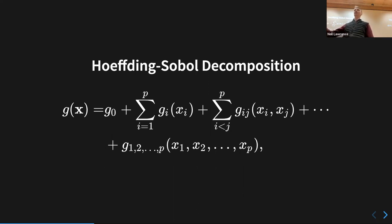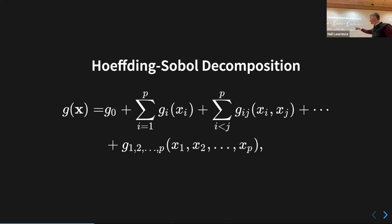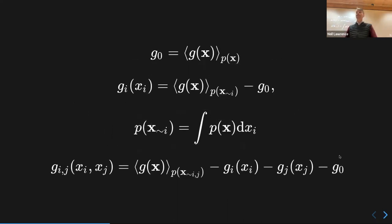I can keep going — quadratic interaction terms between xᵢ and xⱼ, then cubic, and so on. The challenge with this decomposition is that as I go forward the number of terms I need to consider increases.